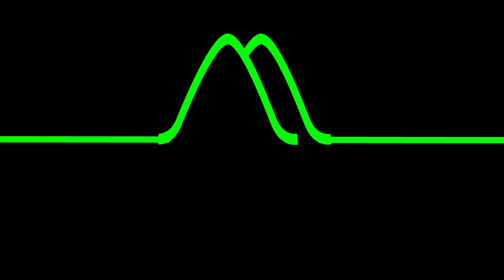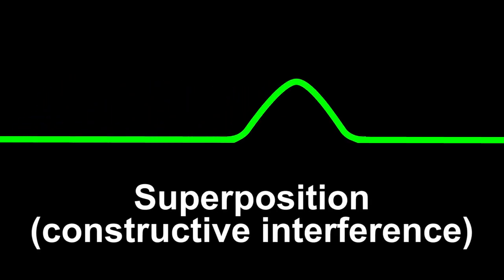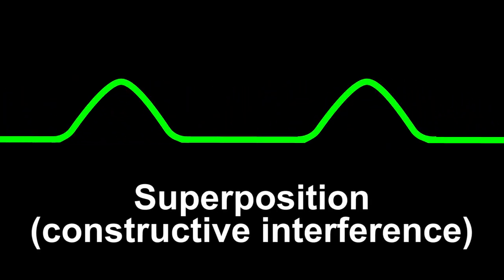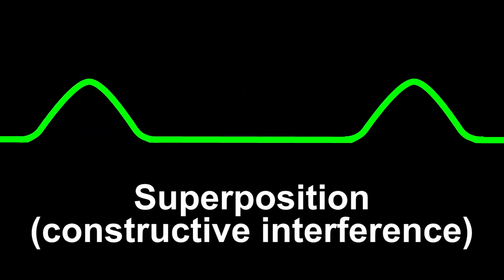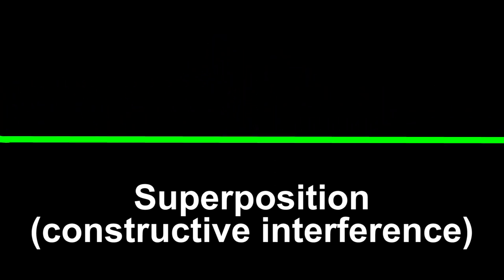So what's going to happen if I run one crest into another crest in the overlap? We'll get superposition again, but this time the two amplitudes will add together, and the resulting wave will be twice as tall as the last wave. This is called constructive interference.